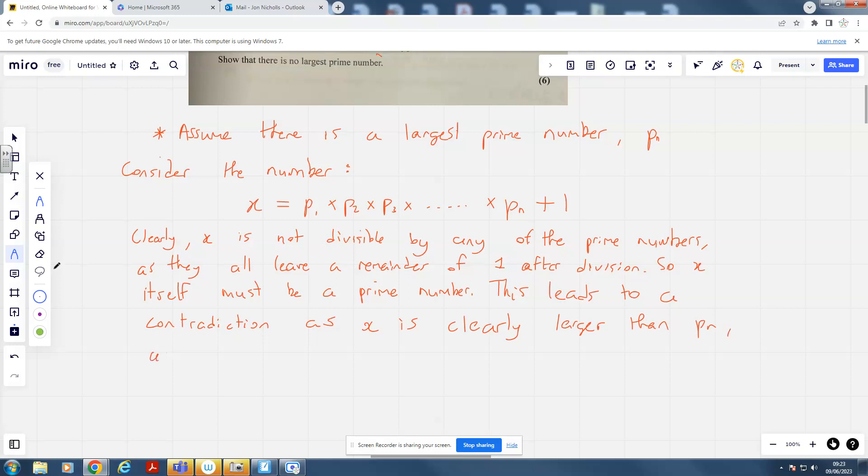We've found our contradiction now, so now we just need the concluding remark. This leads to a contradiction, as X is clearly larger than P_n. Hence, our original assumption is false, and there is no greatest prime number.